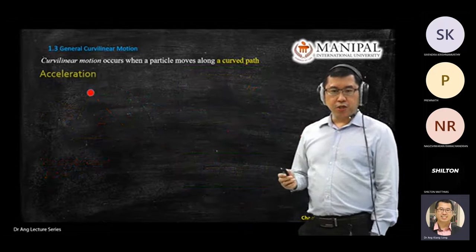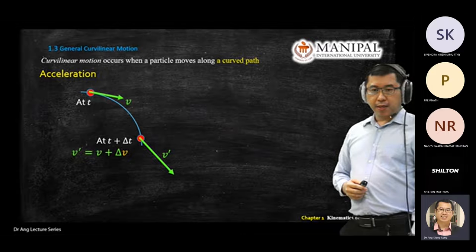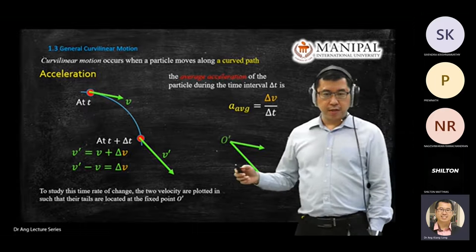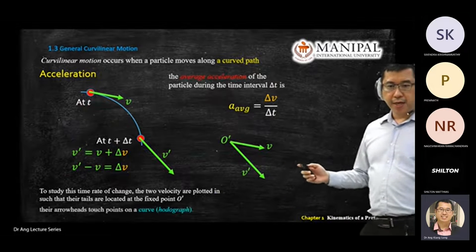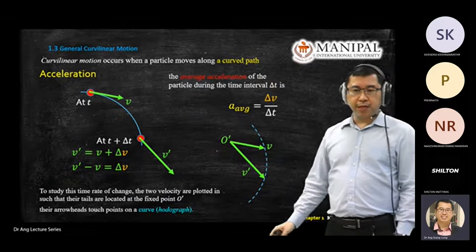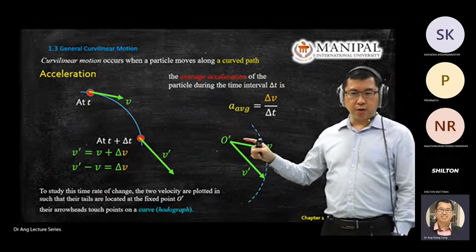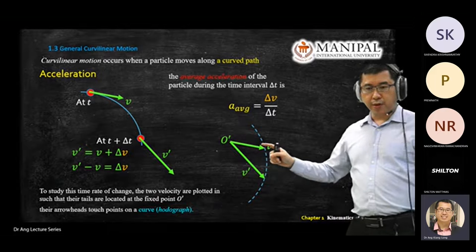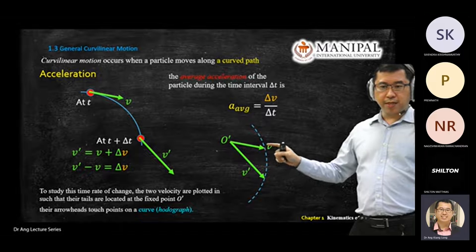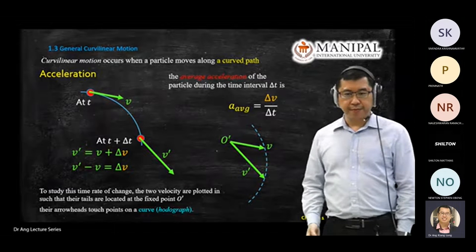We also mentioned the concept of acceleration, and we developed a calculation for acceleration using a vector diagram on a hodograph — an imaginary curve located at the origin or at the tail of two vectors. So when we have velocity one and velocity two, from head to head it gives you delta V. You take delta V divided by T and you get the acceleration.